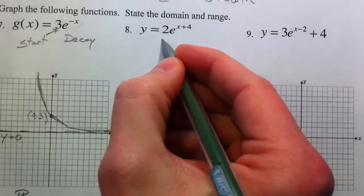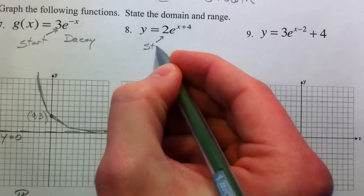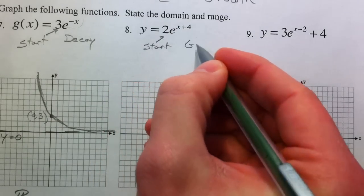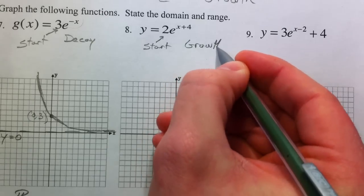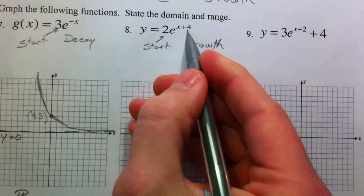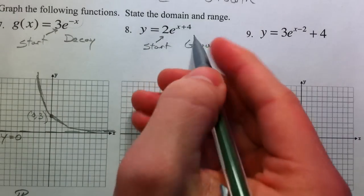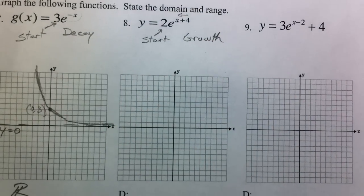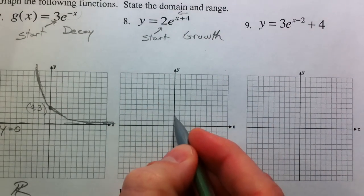Alright, so we have another starting point. e is being raised to a positive x, and so this is going to be growth. And we have a plus 4. It's with the x, and so that plus 4 is going to shift it to the left 4.